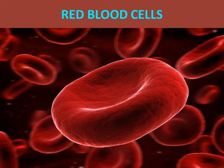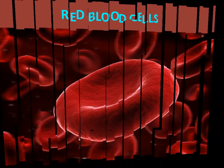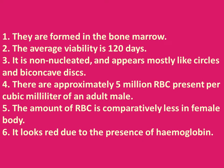There are three blood components: number one is red blood cells, number two is white blood cells, and number three is platelets. Red blood cells are formed in the bone marrow. Their average viability is 120 days. They are non-nucleated and appear mostly as biconcave discs. There are approximately five million red blood cells per cubic millimeter of blood in an adult male, and comparatively fewer in females.